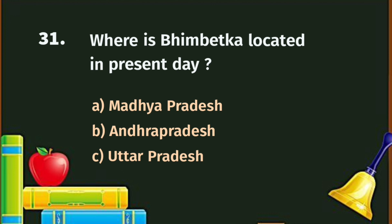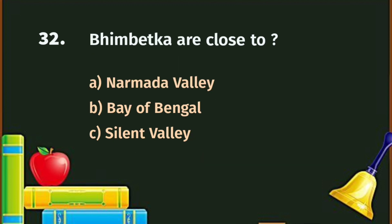Question number 31. Where is Bhimbetka located in present day? A. Madhya Pradesh, B. Andhra Pradesh, C. Uttar Pradesh. The correct answer is A - Madhya Pradesh. Question number 32. Bhimbetka is close to what? A. Narmada Valley, B. Bay of Bengal, C. Silent Valley. The correct answer is Narmada Valley.